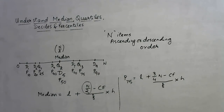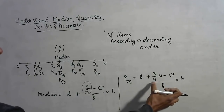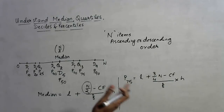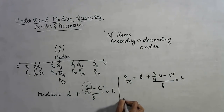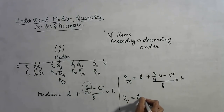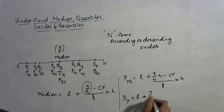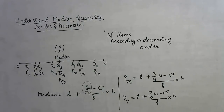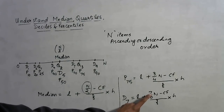Suppose you need to find the formula for the 7th decile D7. Since D7 is the 70th percentile, it equals 70% of n, so you use 7n/10 in place of n/2. The formula becomes: L + (7n/10 − cf) / f × h. Everything remains the same except this value changes, and accordingly you select cf, f, and L from the given data.